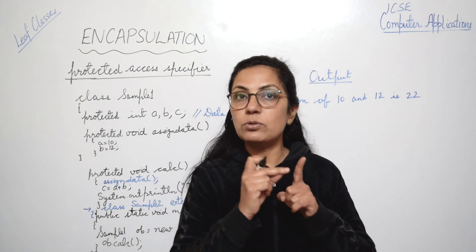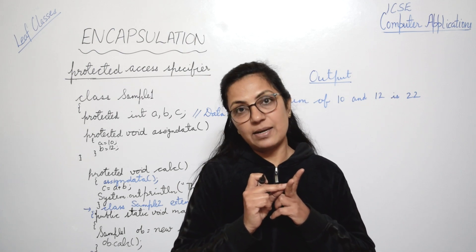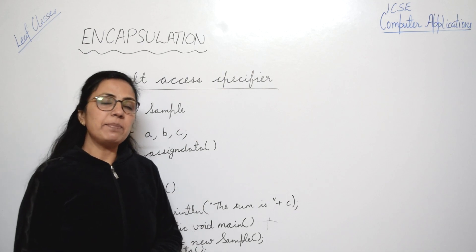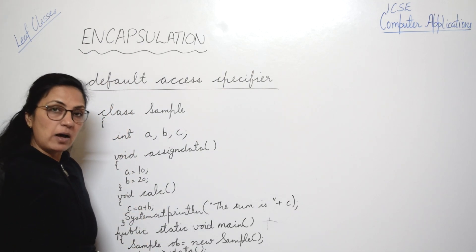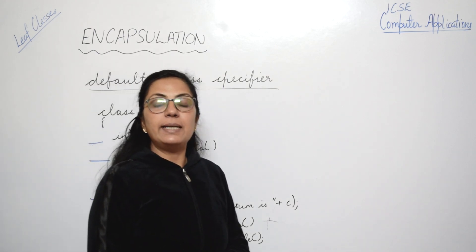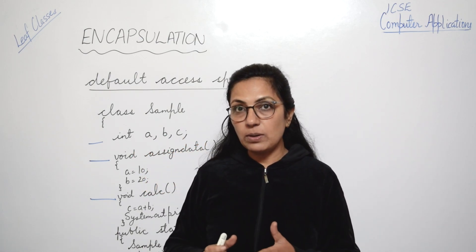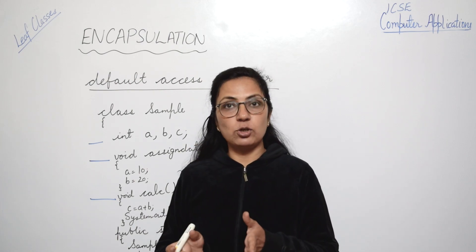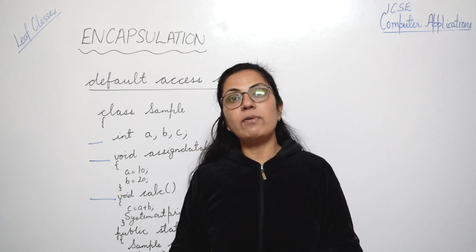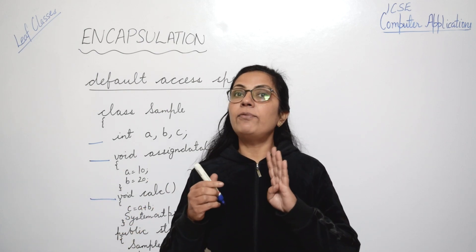To summarize: private means available to that class only; public means available to all; protected means available to that class and its subclasses. Now the default access specifier or package access specifier — although not mentioned in your syllabus, let me explain. When you write programs normally without specifying any access specifier, the default access specifier is taken. Default access specifier means the data members and member functions are available to that particular class and to all other classes in the same package. If there are three classes in a package, data members with no access specifier will be available to all three.